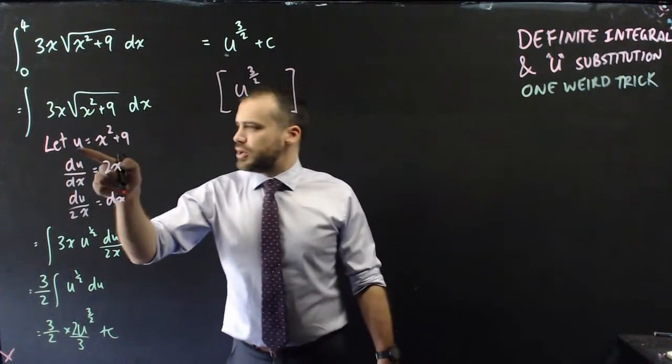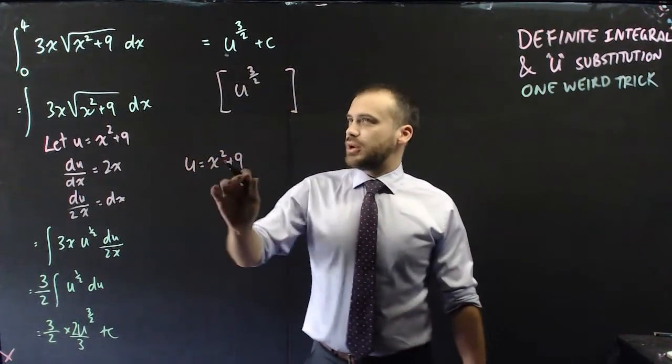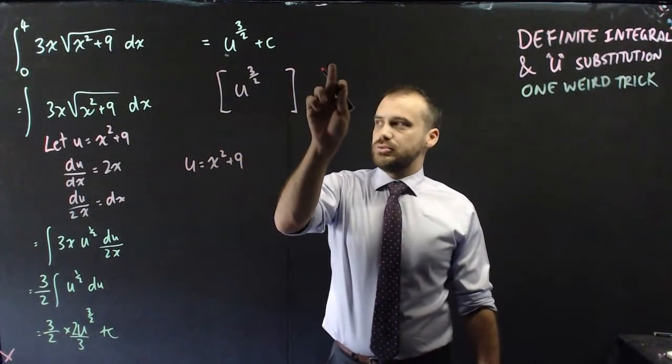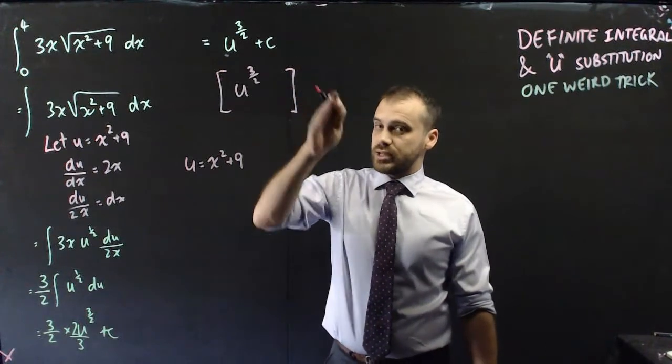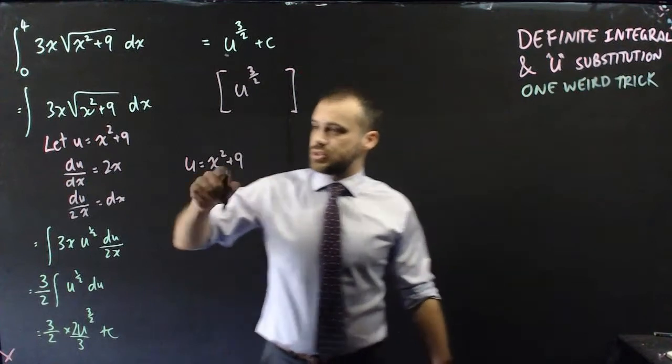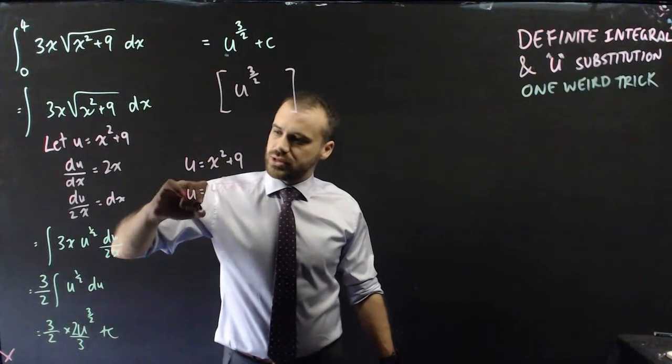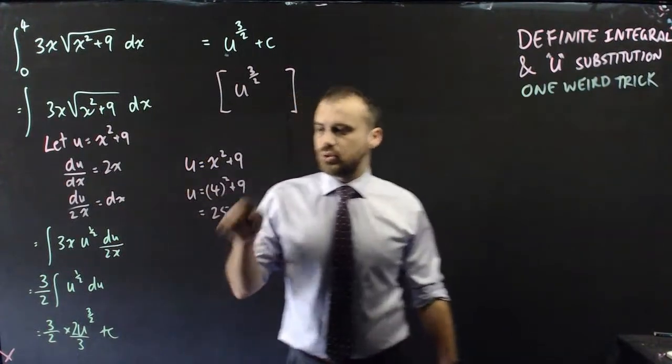So we know that u equals x squared plus 9, and I know that I want this value to be 4. That is, I want the x value to be 4 here. So if I sub 4 in there, I'll have 4 squared plus 9, I'll have 25.